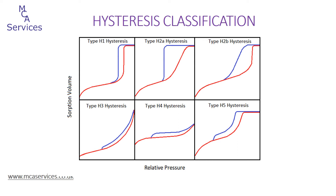We can now go on to look at the classifications of hysteresis types and their relationship with pore structure or textural properties. As we can see here, there are six general classifications of isotherm hysteresis, and these vary according to the shape of both the adsorption and the desorption isotherms. The approach to describing these is quite similar to that applied to the adsorption isotherms previously. Looking at the adsorption isotherms shown here in red, we can see that they are either type 2 or type 4.